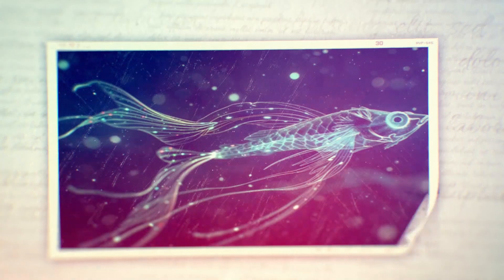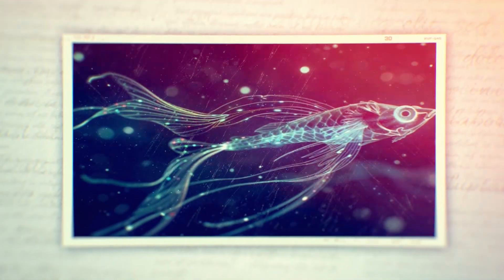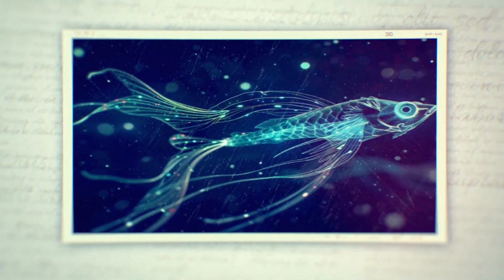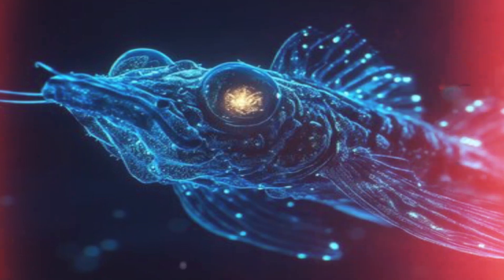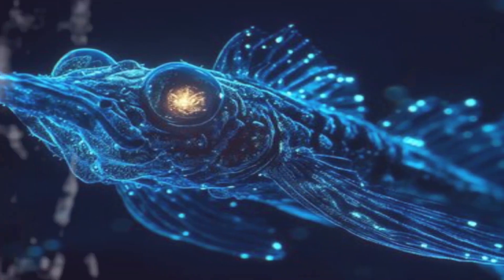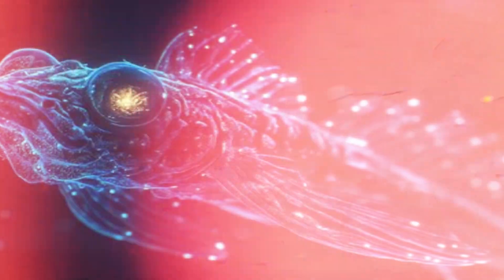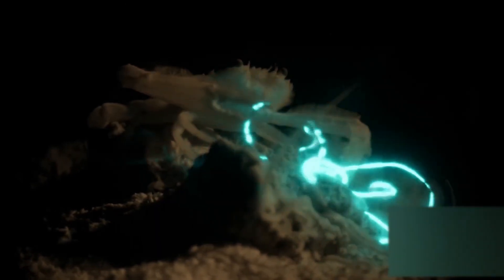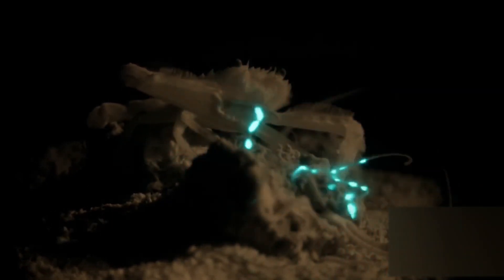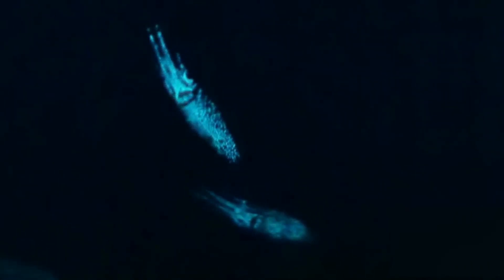To a predator looking up from below, the lanternfish becomes virtually invisible. This form of active camouflage is a testament to the ingenuity of evolution. It's a reminder that, in the deep sea, survival often depends on the ability to control light, whether by producing it or by using it to disappear.